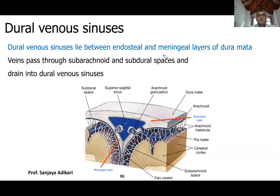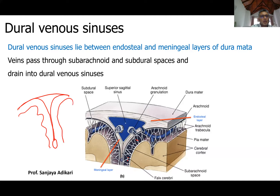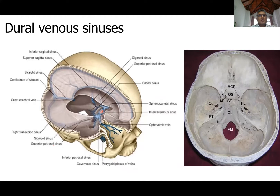The superior sagittal sinus is not the only dural venous sinus. At the top, you have the superior sagittal sinus, then you get the falx cerebri, then the inferior sagittal sinus. You get your brain here and your corpus callosum — you can see the superior sagittal sinus and the inferior sagittal sinus in relation to the falx cerebri.